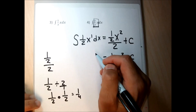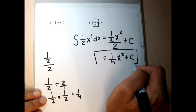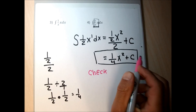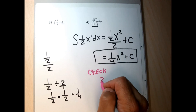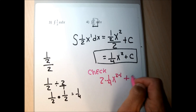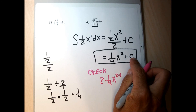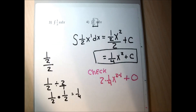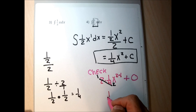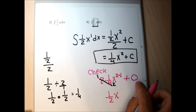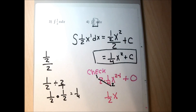To check: the derivative of one-fourth x squared is 2 times one-fourth, which simplifies to one-half, times x to the first, plus zero from the constant. That gives one-half x — exactly what was under the integral sign. So the integral was done correctly.